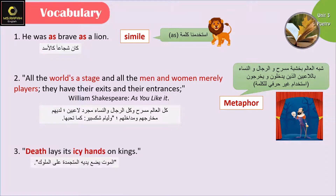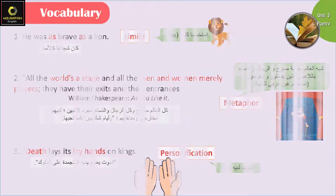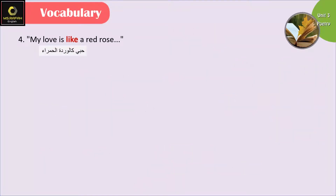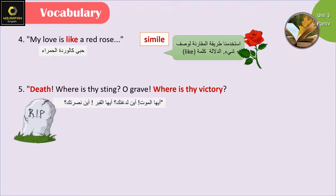'Death lays its icy hands on kings.' Death — الموت — عنده hands، عنده يدين — so we have personification. 'My love is like a red rose.' هون استخدمنا المقارنة لوصف شيء واستخدمنا كلمة like — إذن this is a simile. 'Death, where is thy sting? Oh grave, where is thy victory?' thy هي كلمة قديمة معناها your. قلنا إنه الموت بيلدغ والقبر لديه انتصار مثل البشر — عطينا صفة بشرية لشيء غير بشري — this is personification.